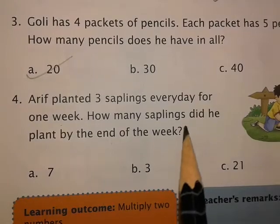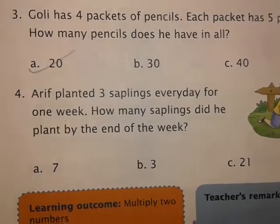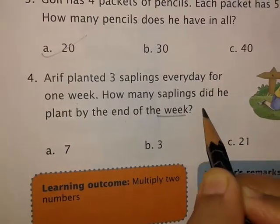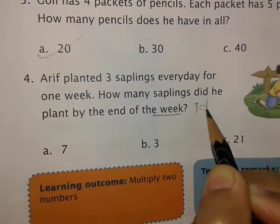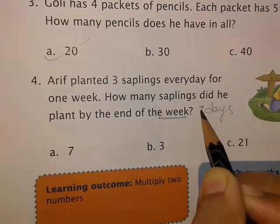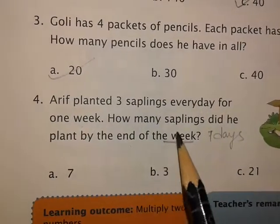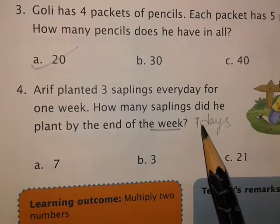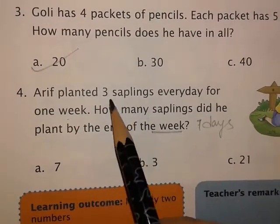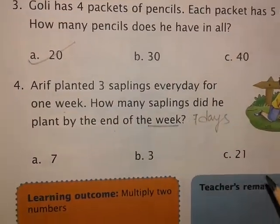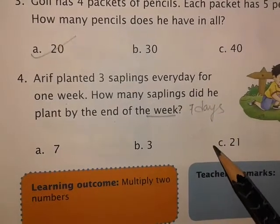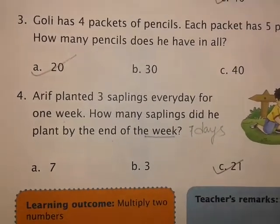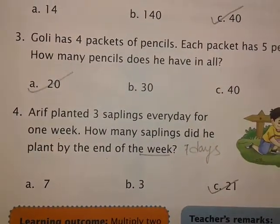The fourth question: Aru planted three saplings every day for one week. How many saplings did he plant by the end of the week? One week is equal to seven days, so he planted saplings for seven days. We multiply seven into three — seven threes are twenty-one. So twenty-one is our answer for this page.